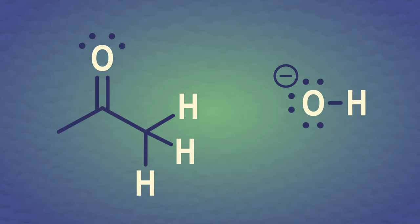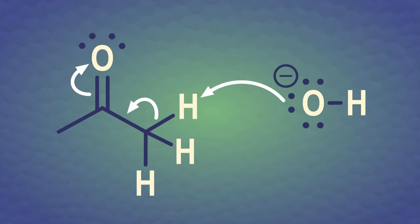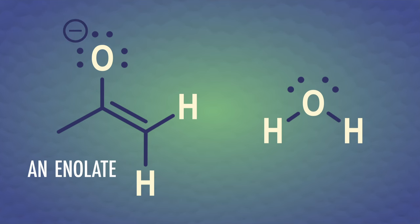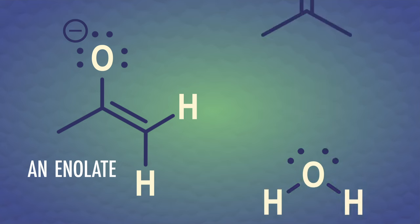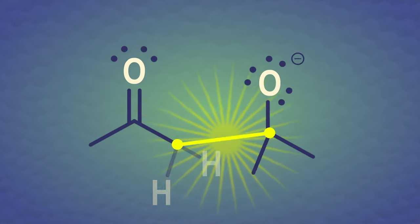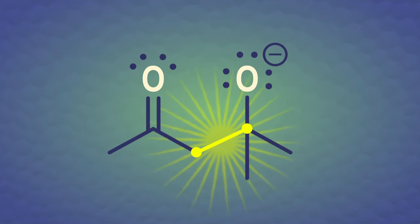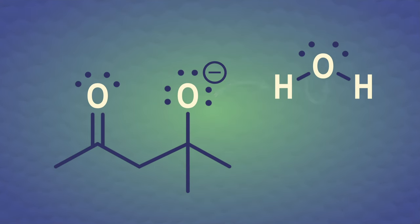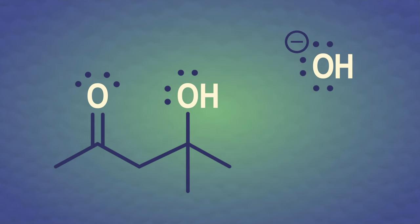First, an aldol reaction under basic conditions. As we saw in the last episode, a base steals a proton from the alpha carbon of the carbonyl. This gives us an enolate ion with a resonance-stabilized negative charge. This enolate is only formed in small amounts. So next, an enolate molecule attacks the carbonyl of one of the ketones in the sea of acetone molecules, which are acting as electrophiles. And once this addition step is done, we've formed a carbon-carbon bond. The now-negative oxygen of the alkoxide swipes a proton from some nearby water. Now we've got an aldol product with a carbonyl and an alcohol.